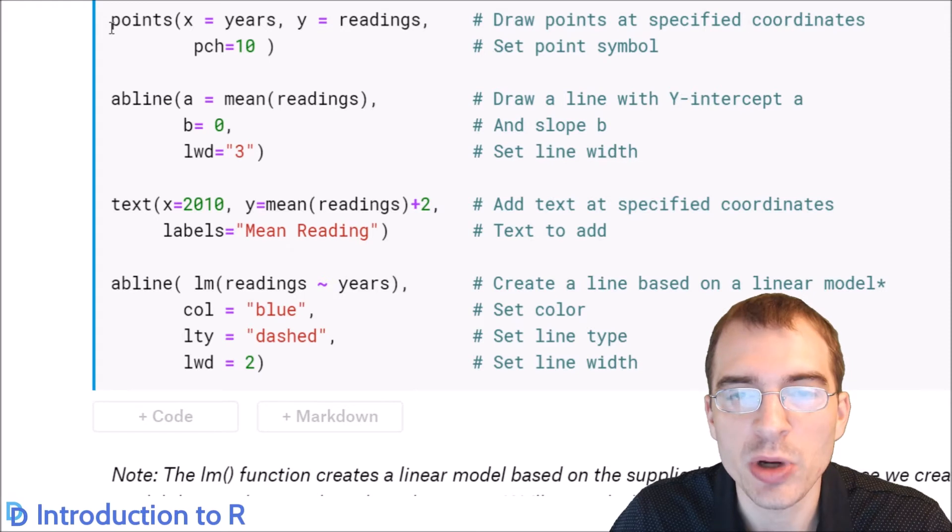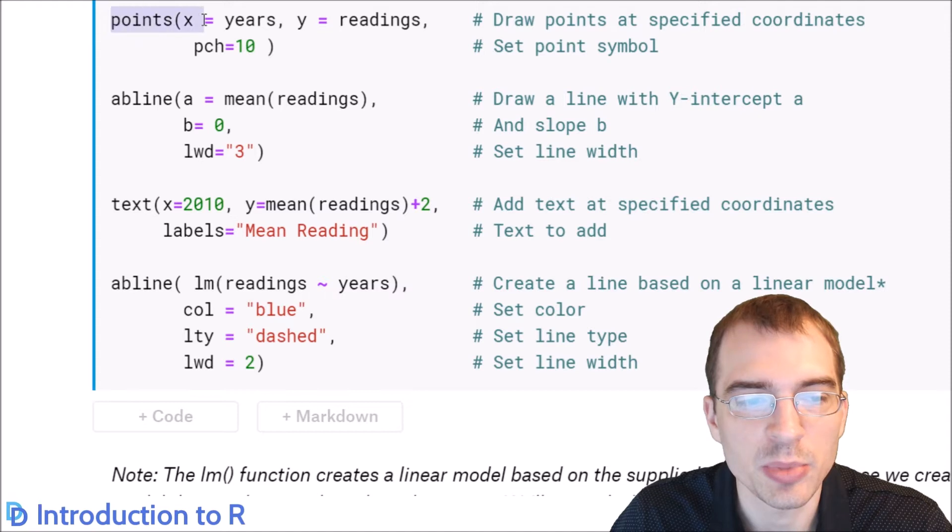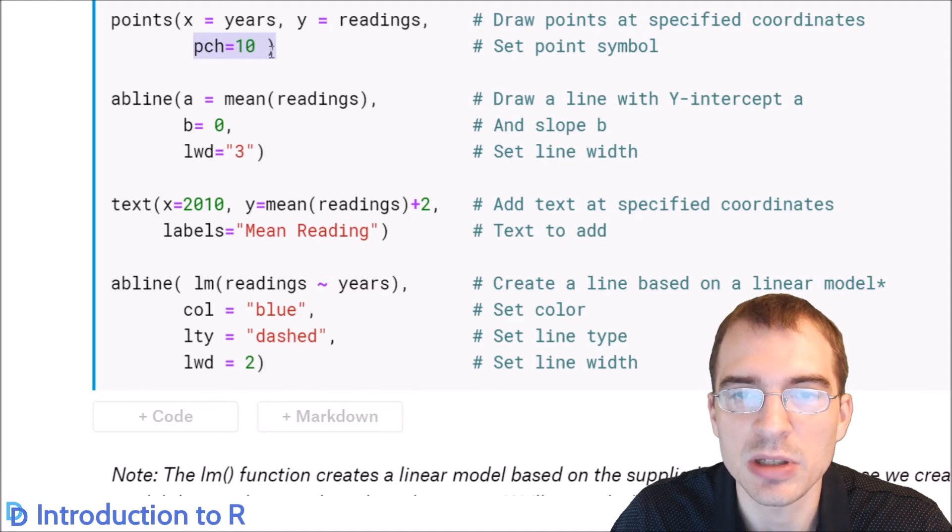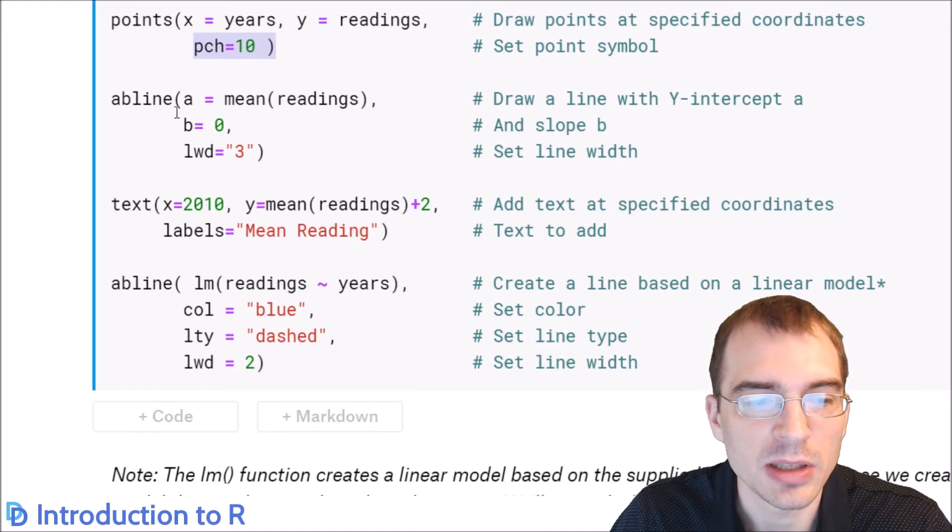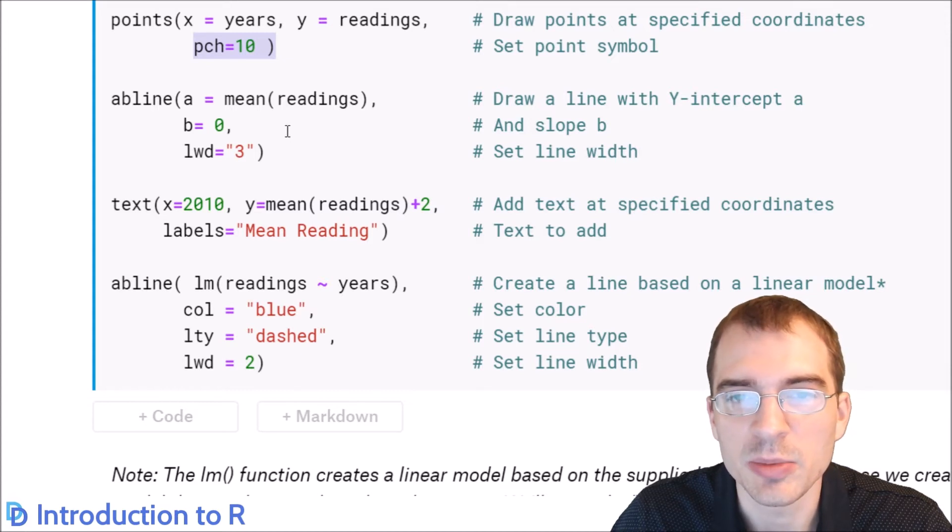So here, this points call draws points at the vertices of the line plot. Because our initial plot only had the line, sometimes it's nice to have points, but it's easier to see specific values. So we're just going to draw points for the same data. And this PCH argument just sets what point symbol you want. In this case, we're passing in something different than the default, which would probably just be a dot. So this will have a different type of point. The ABLINE function will draw arbitrary lines on plots wherever you want them, given arguments for the y-intercept and slope. So this particular line is just going to be drawn at the average value for the plot. So A, which is the y-intercept, we're just going to set to the average. And B, which is the slope, we're going to set to zero because we want a horizontal line at where the average is.